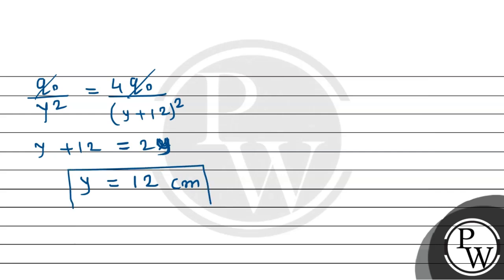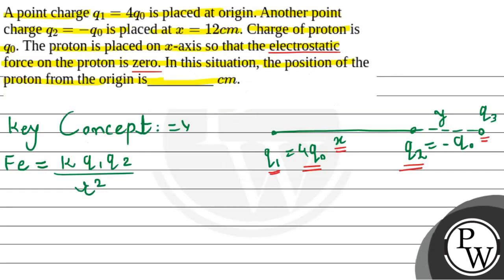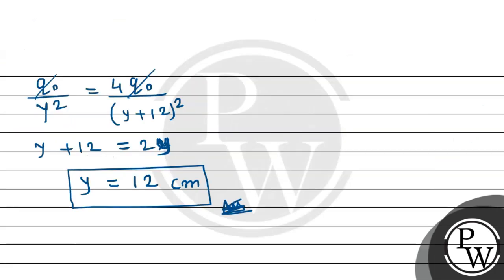यानि कि proton Q2 से कितने distance पर होगा, 12 cm के distance पर होगा। But basically यह जो distance है, वो तो इस point Q2 से है, हमें origin से बताना था। Answer क्या होगा, origin से distance?